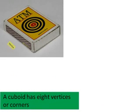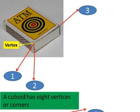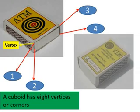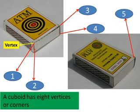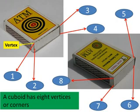A cuboid has eight vertices or corners. A vertex is a point where edges meet. Let us count the vertices: one, two, three, four. The other matchbox is the back view of vertices five, six, seven, and eight.